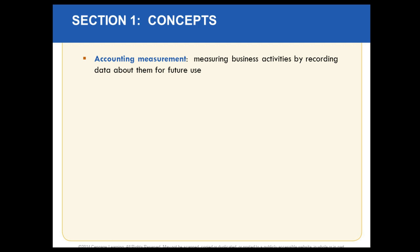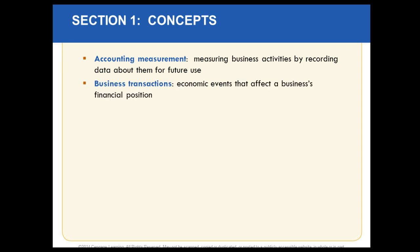Accounting measurement — what does it mean? We've got to find ways of measuring various types of activities. Accounting is our way in which we provide information, measuring and recording data that helps people make sense of it. Accounting measurement is the manner in which we measure this data. The way we measure data is through something called business transactions.